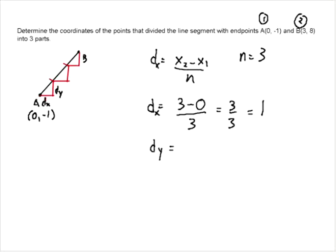We're going to do the same formula for dy. We're going to take y2, which is 8, minus y1, which is -1, divided by 3, which is 9 over 3, which is 3. So that tells us that if we're going from A to B, we take our first coordinate, which is (0, -1).